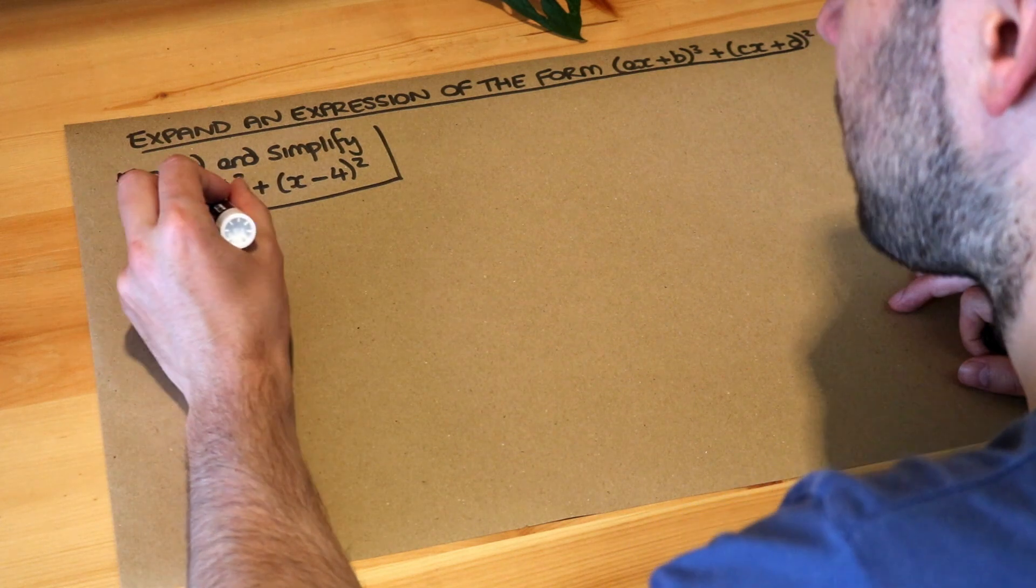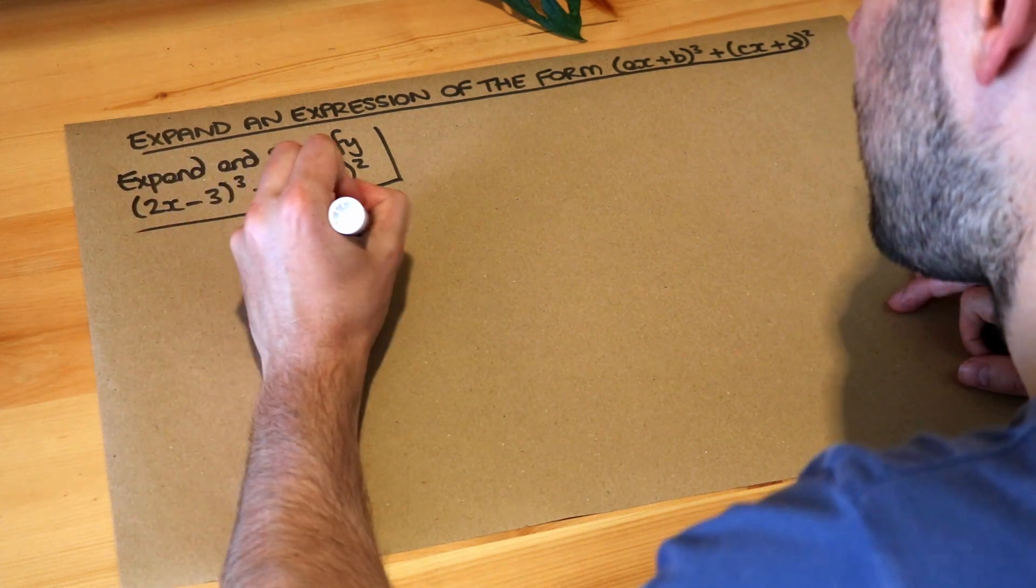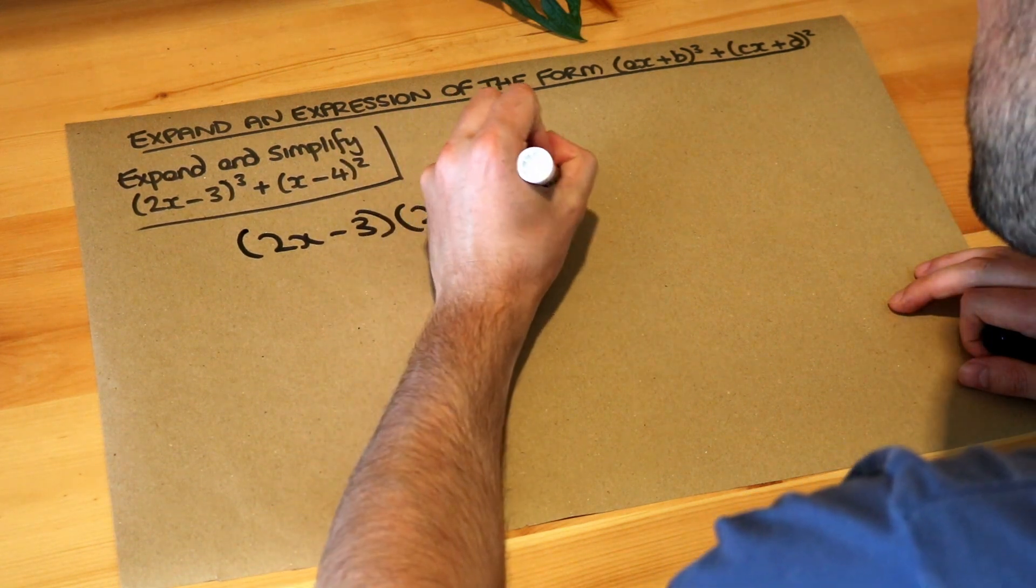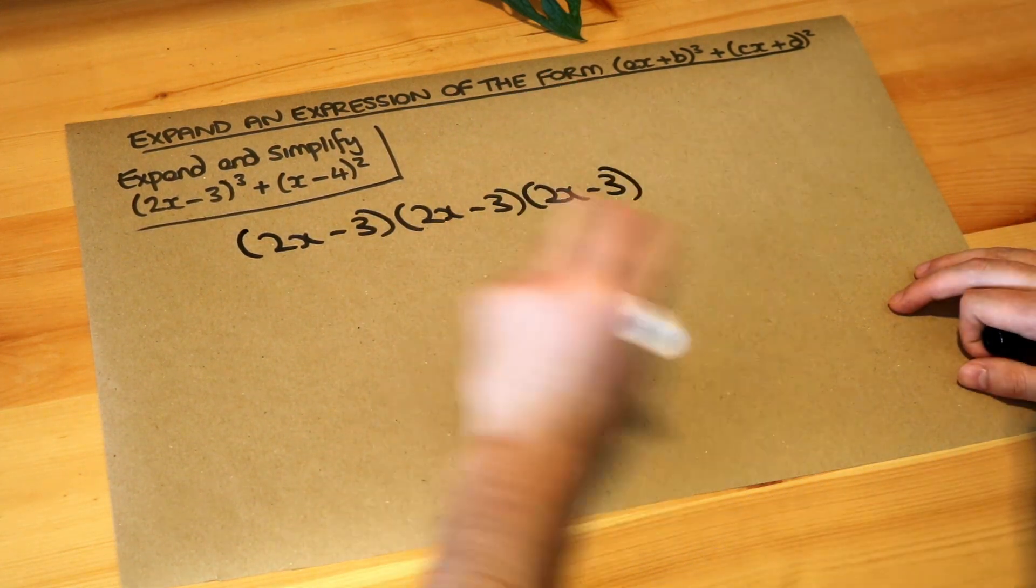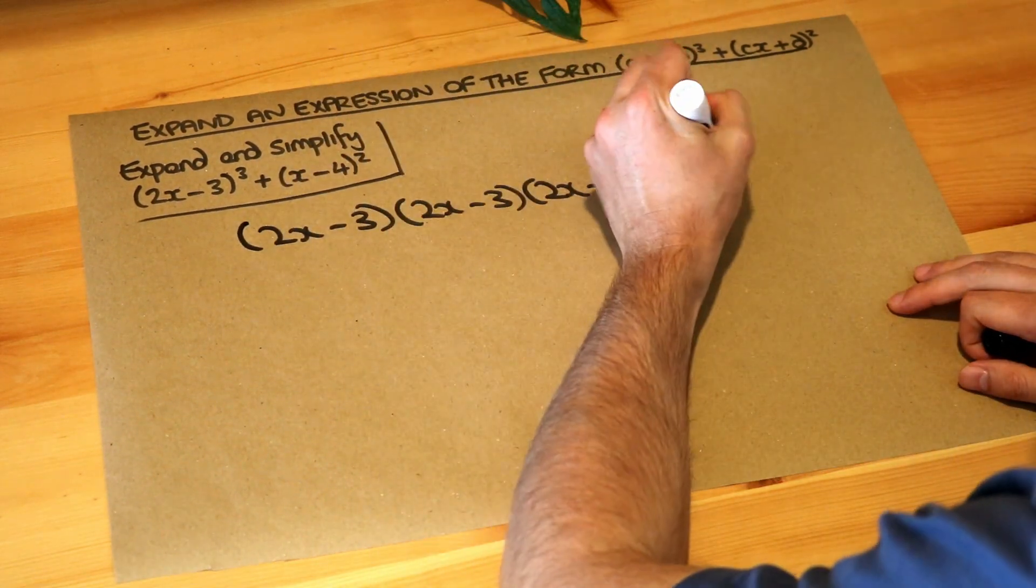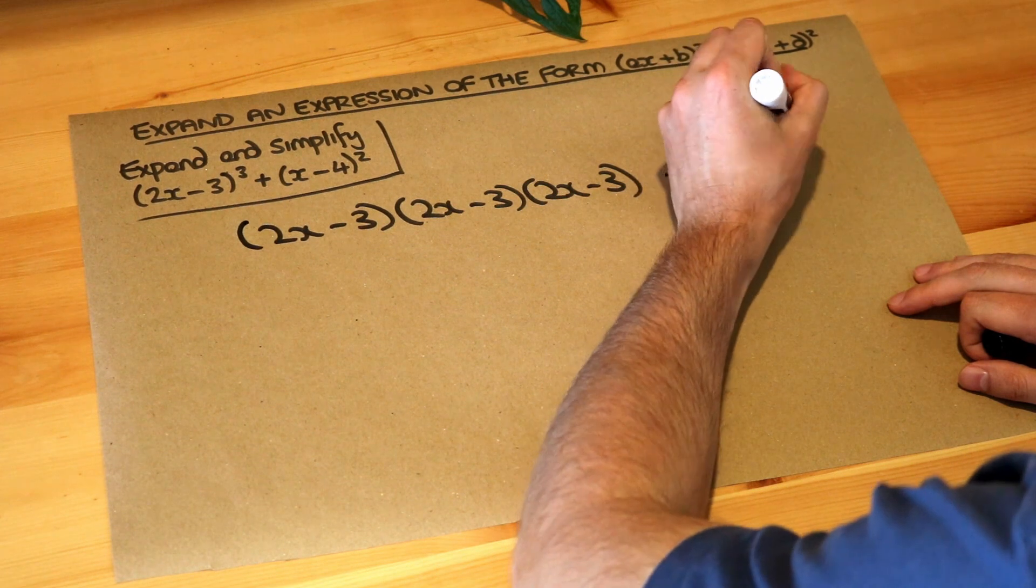So (2x-3)³ means (2x-3) times (2x-3) times (2x-3), and then we're adding (x-4)² so that means (x-4) multiplied by (x-4).